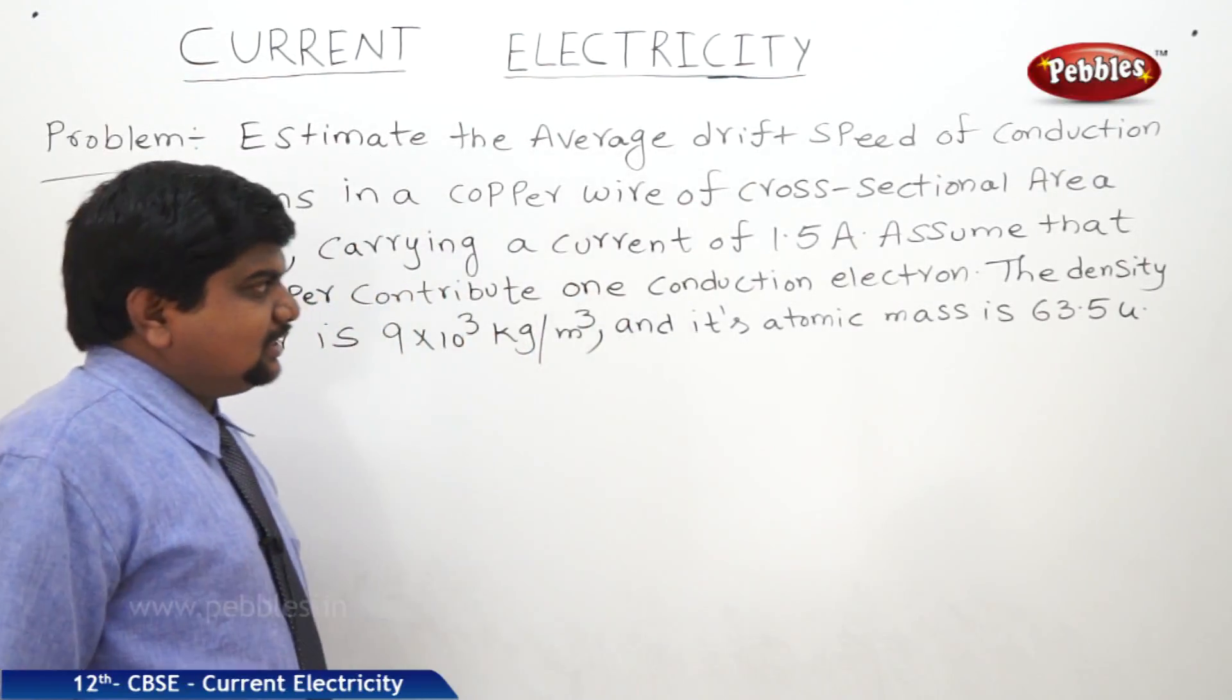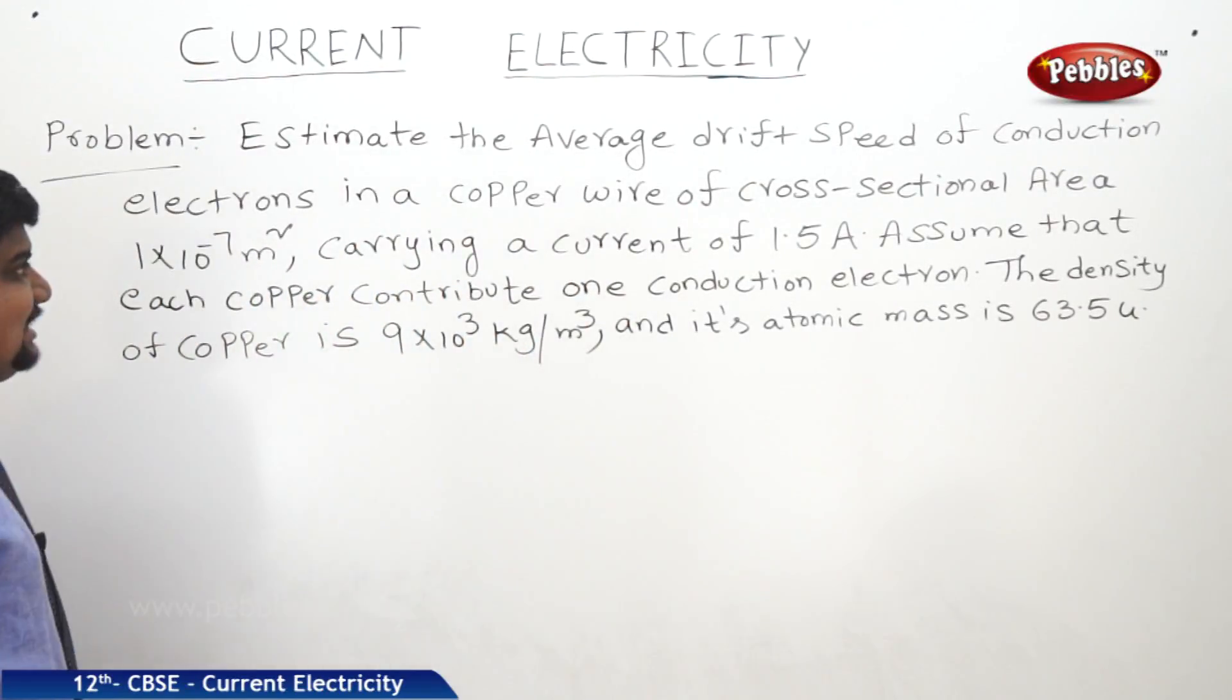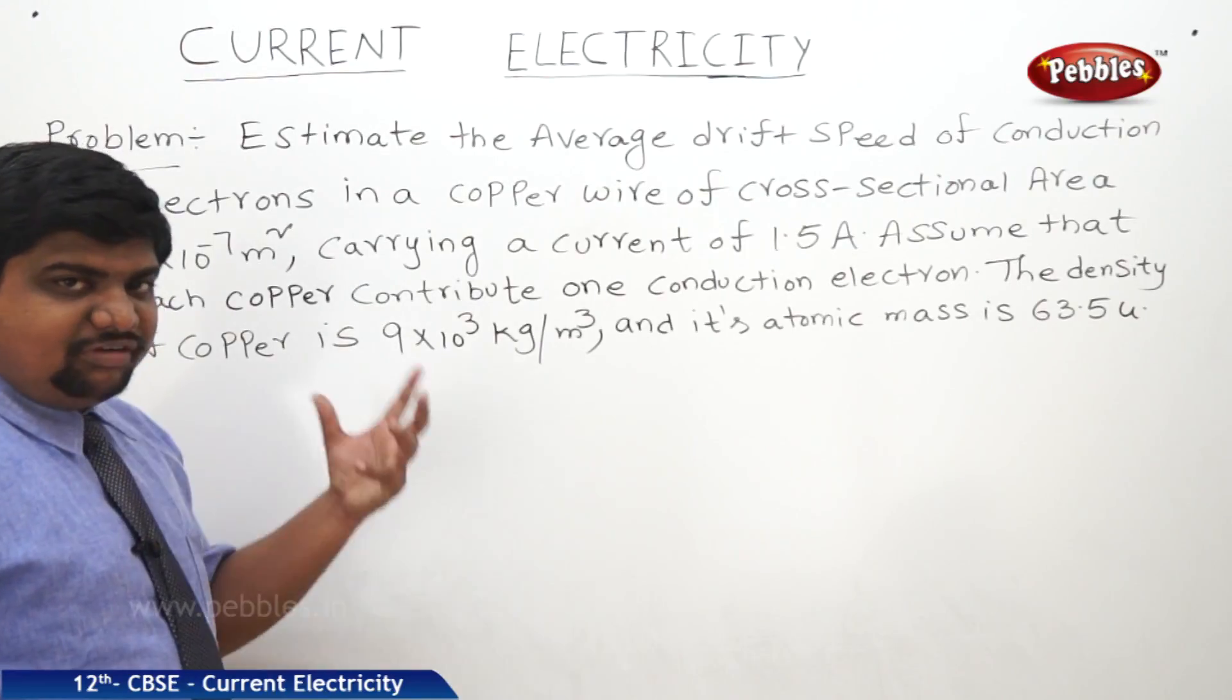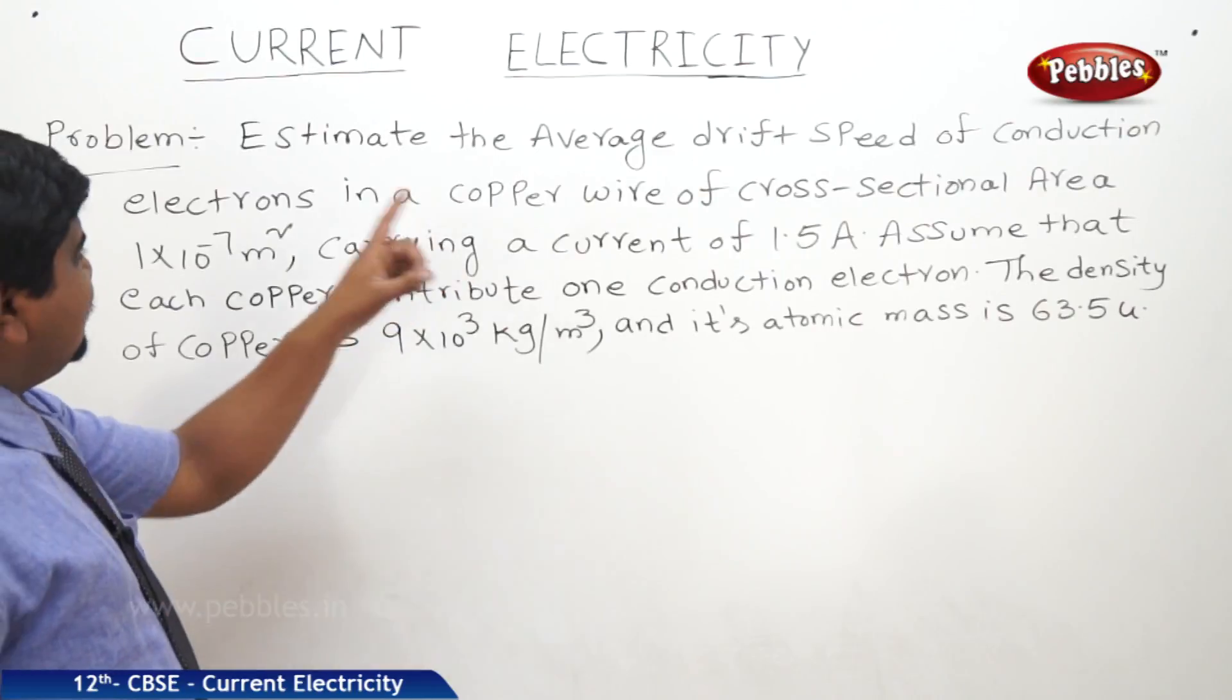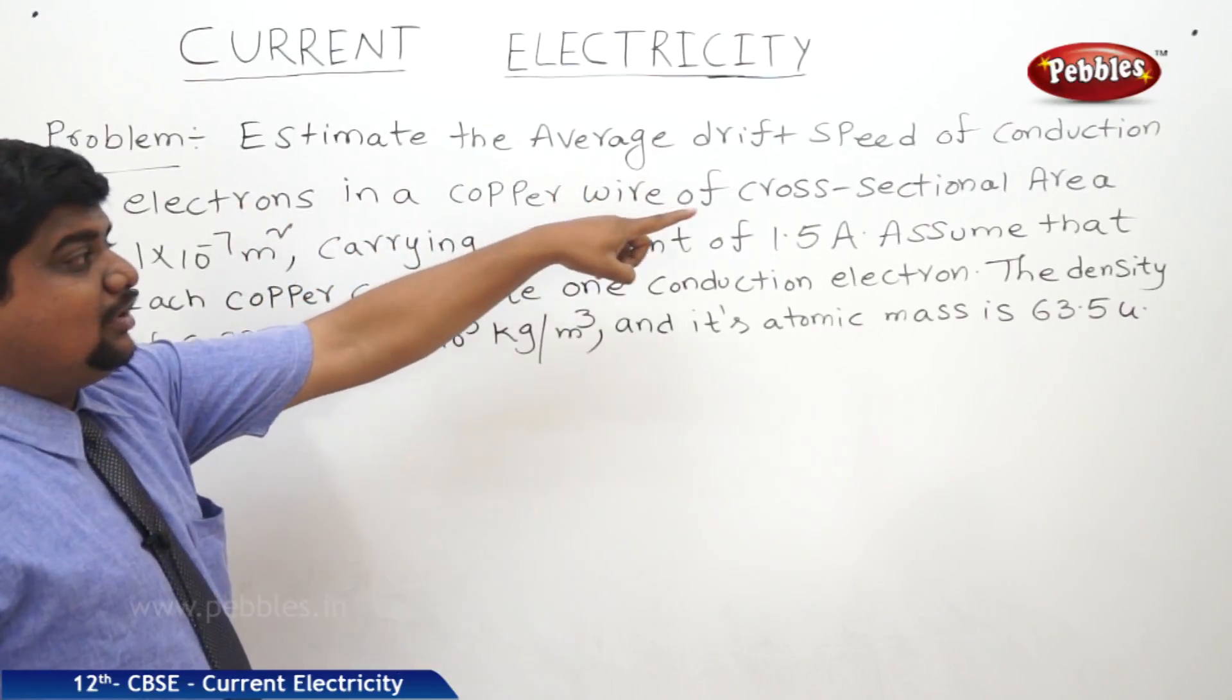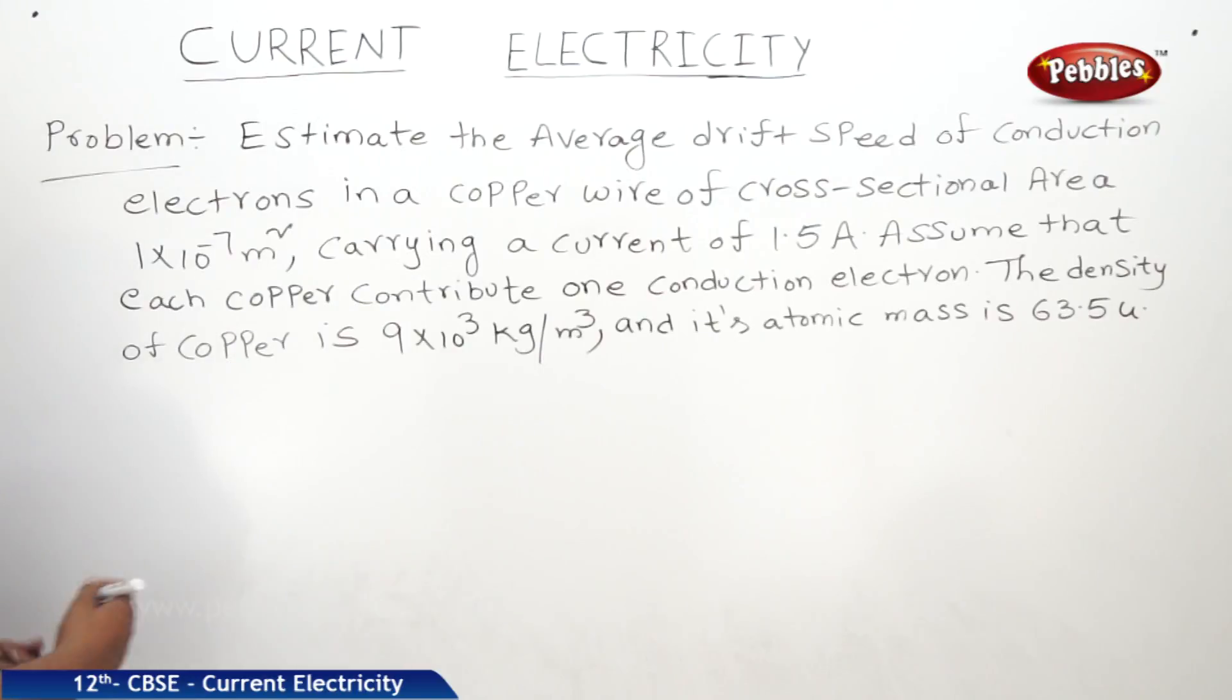Now we will see one problem. It has contained some parts. See the question: estimate the average drift speed. We are going to find out the drift velocity of the electron, but what are the conditions to find out of conduction electrons in a copper wire of cross sectional area 1 into 10 to the power of minus 7 meter square. That means in answer,